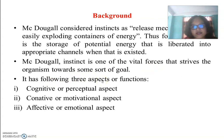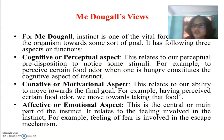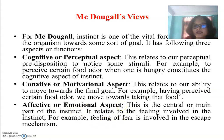According to McDougall, instinct has three aspects. First, the cognitive or perceptual aspect: a personal predisposition to notice certain stimuli — for example, to perceive a certain food odor when one is hungry. Second, the conative or motivational aspect: the ability to move toward a final goal — for example, having perceived a certain food odor, we move toward obtaining that food. Third, the affective or emotional aspect: the central or main part of the instinct, relating to the feeling involved — for example, the feeling of fear is involved in the escape mechanism.